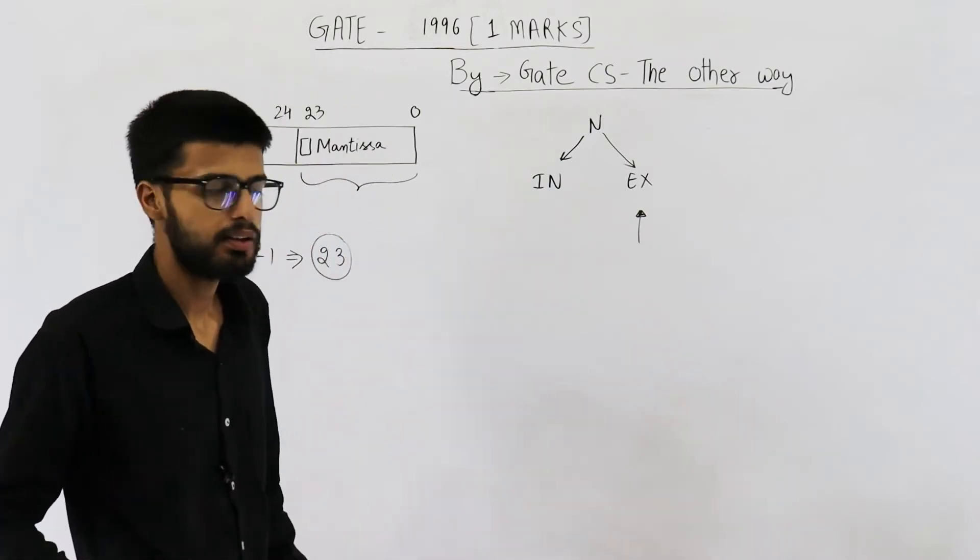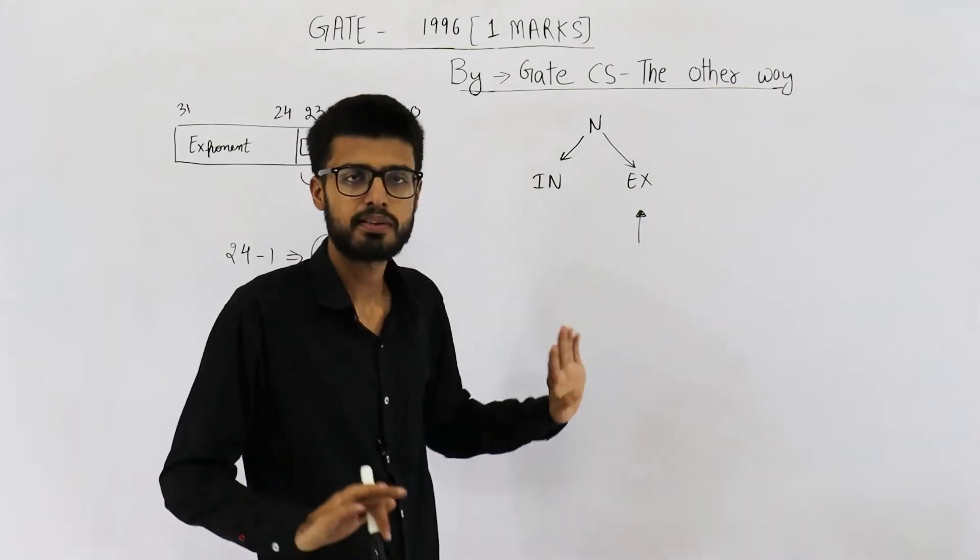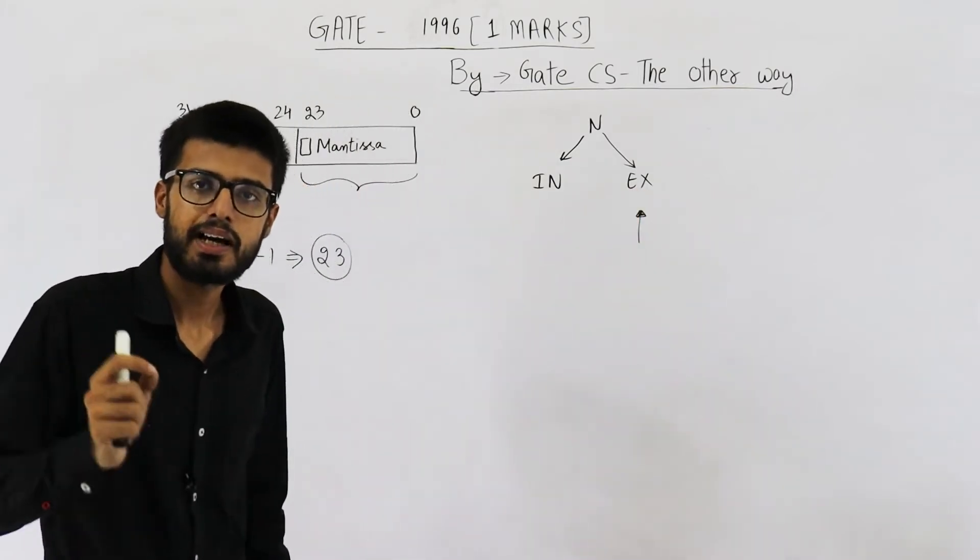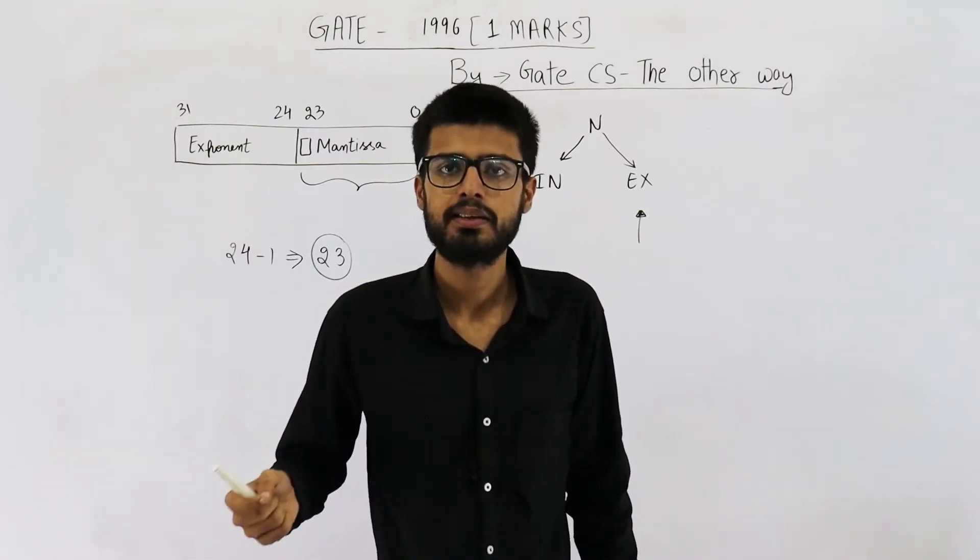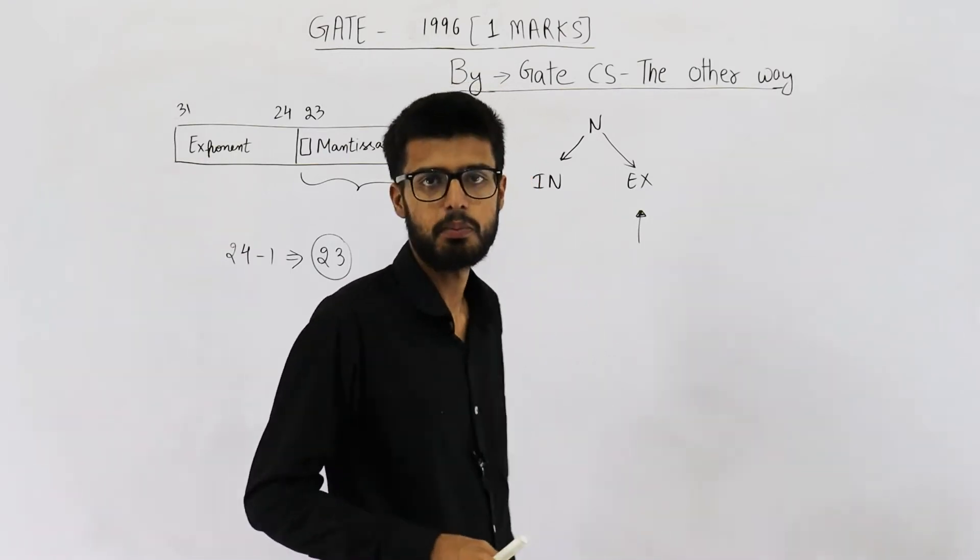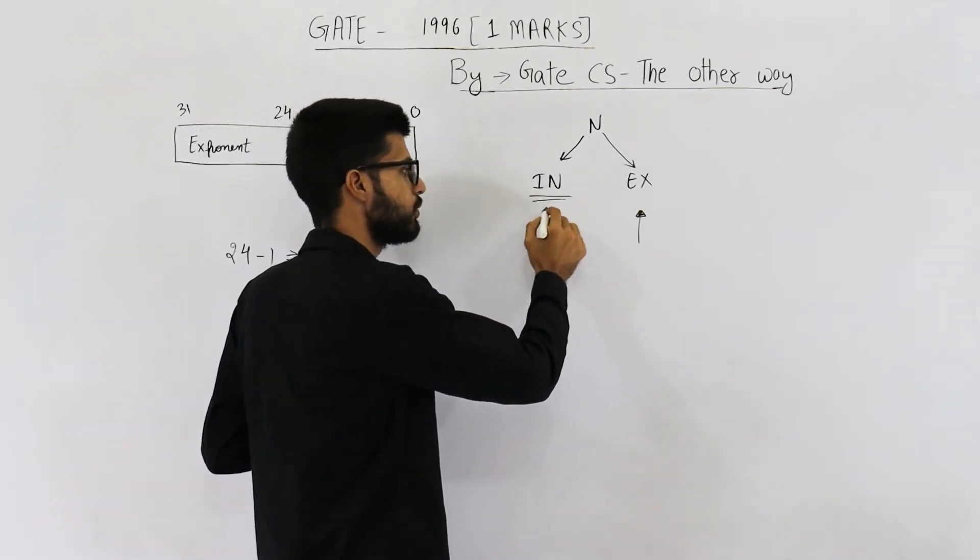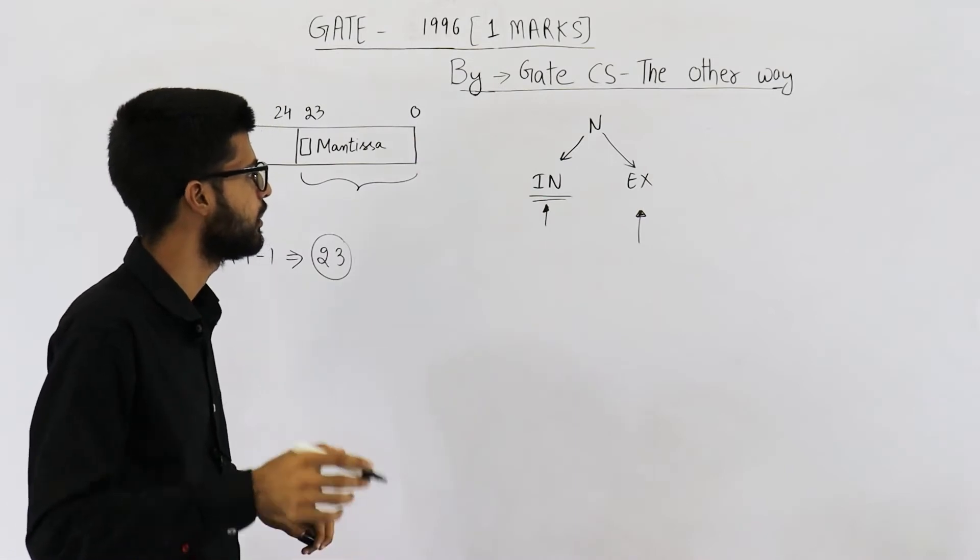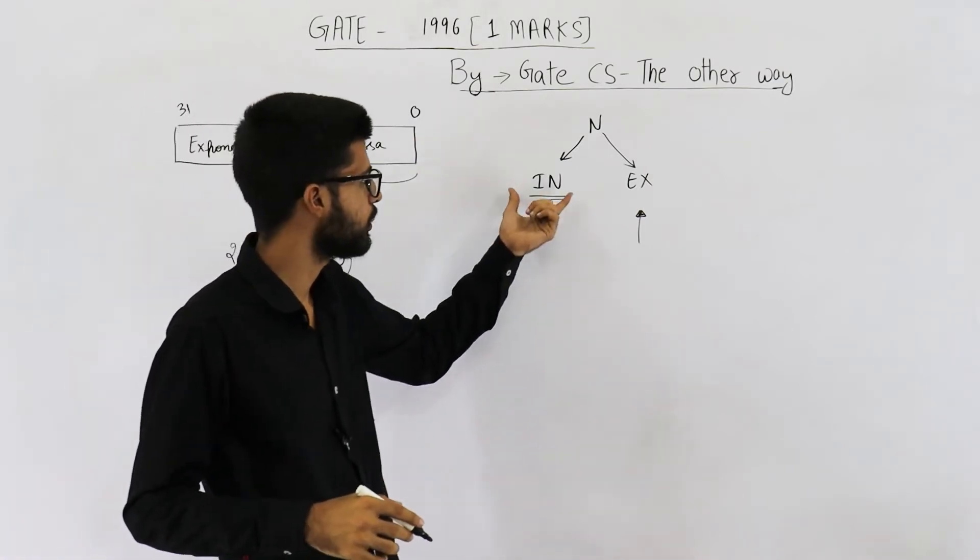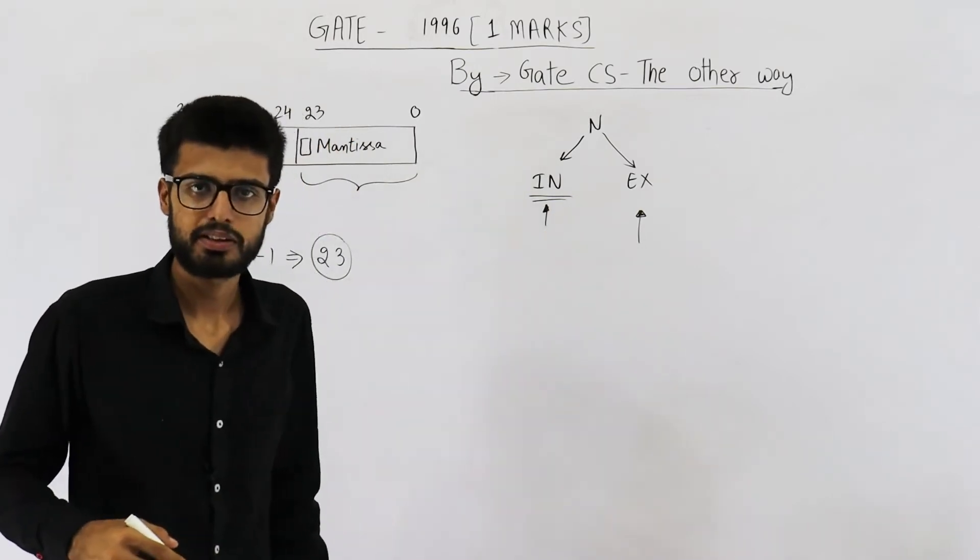And if they have mentioned, then there is no confusion. If they are saying implicit, then implicit. If explicit, then explicit. And if they haven't mentioned anything, but the question is about IEEE single precision or IEEE double precision, in that case, we will be using implicit normalization because IEEE standards specify that the numbers will be implicitly normalized. What is meant by these two normalization techniques?